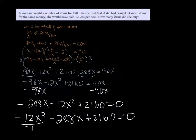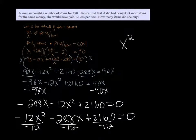And then dividing each term by negative 12 - this will make it easier for us to solve it - we get X squared plus 24X minus 180 equals zero.